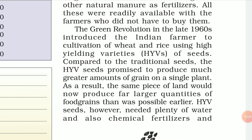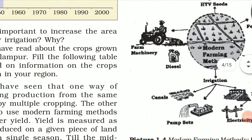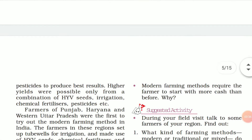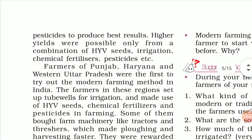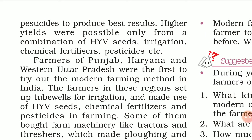However, HYV seeds needed plenty of water and chemical fertilizers. After the Green Revolution introduced modern farming techniques, HYV seeds promised more grains per plant, which raised yield. But it was not enough to just buy HYV seeds — you also had to add chemical fertilizers, pesticides, and more water to increase the yield.